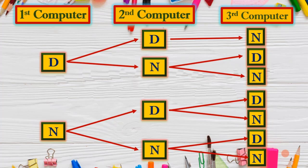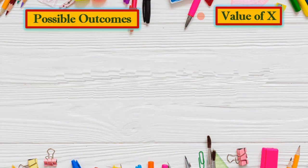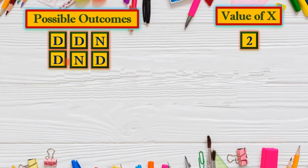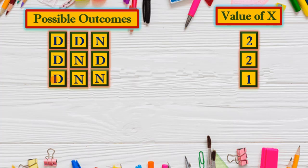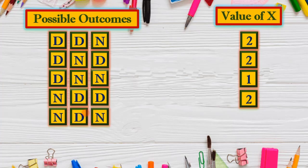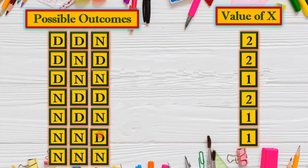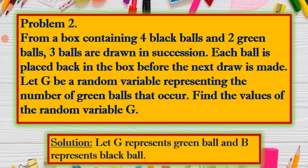Let's list all possible outcomes and count the number of D's (the value of x) in each. First: DDN — two D's, x = 2. Next: DND — two D's, x = 2. Then: DNN — one D, x = 1. Next: NDD — two D's, x = 2. Then: NDN — one D, x = 1. Also: NND — one D, x = 1. Finally: NNN — zero D's, x = 0. Therefore, the values of the random variable X are 0, 1, and 2.